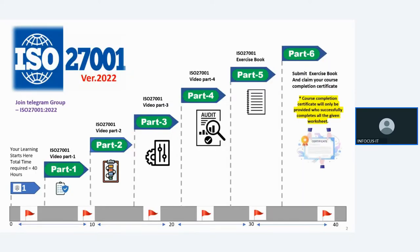Before we start the course, I am sharing the complete blueprint. There are various stages through which we would be going, which are marked as part 1, part 2, part 3, part 4, part 5, and part 6. Let me explain what all they mean.